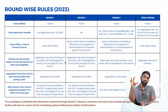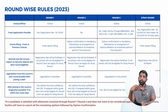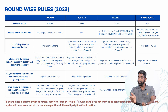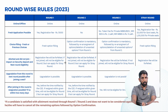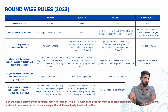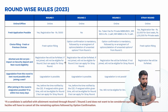After joining the Round Two seat, there is an option to resign the seat within the time period given by CEE. If you resign the seat in Round Two, you will not be eligible for Round Three, just like Round One. After resigning the seat, you will not be eligible for Round Three, but there is an option to apply as a fresh registration in the Stray Round.